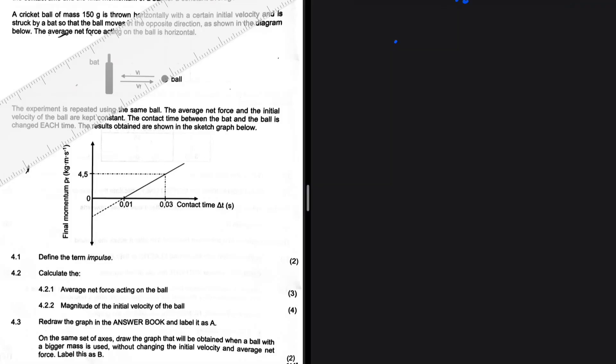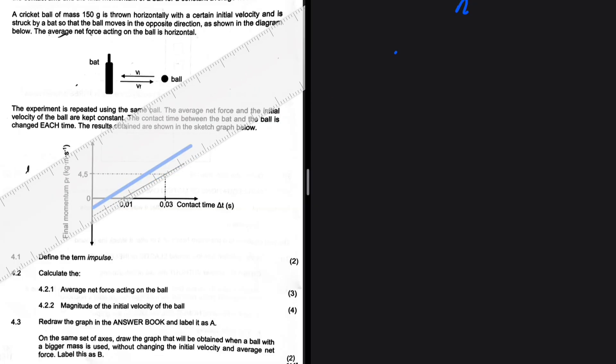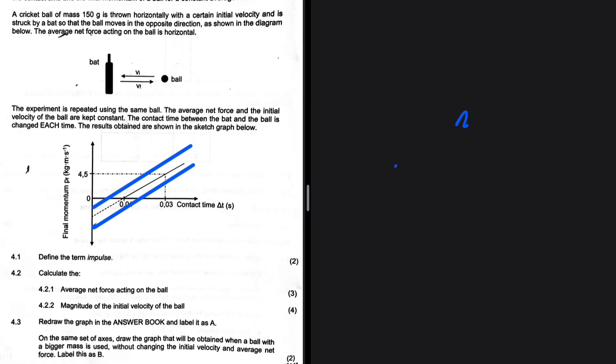Before we do the other equations, let's take a look at 4.3 first. So we have increased the mass of the ball. We want you to draw a graph on the same set of axes. So these are the two options: is the graph above the original or below the original? Let me know in the comment section which of the two options you had. Was your graph above the original or was it below the original?